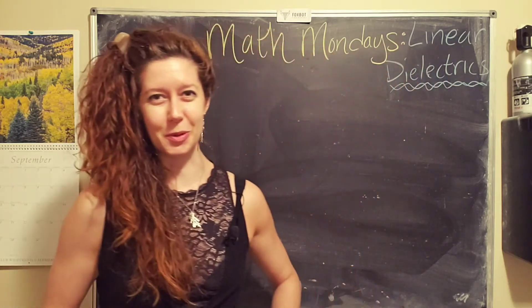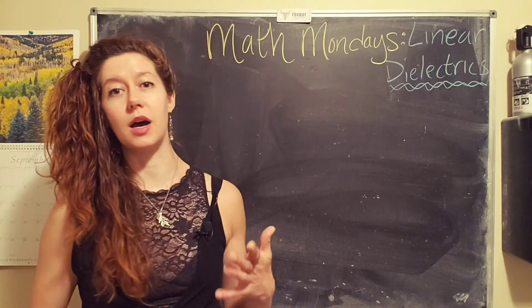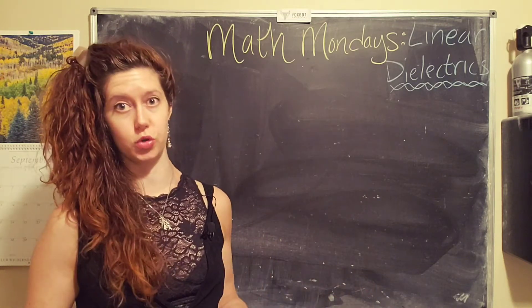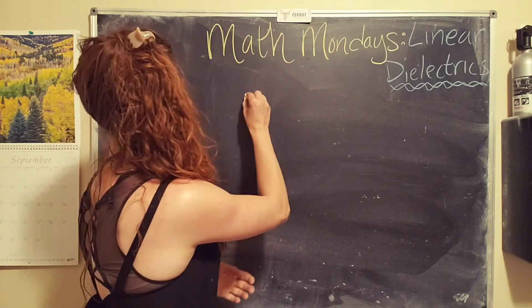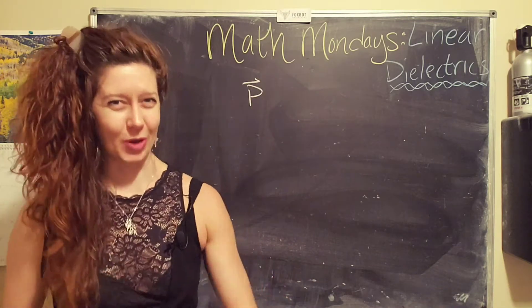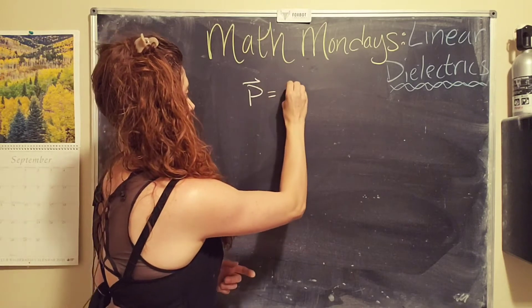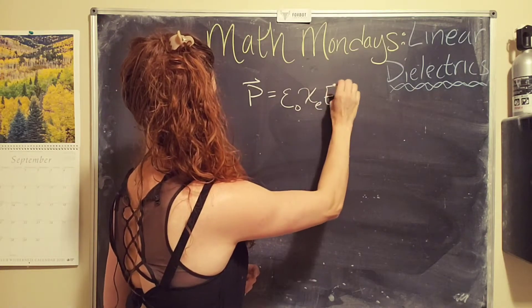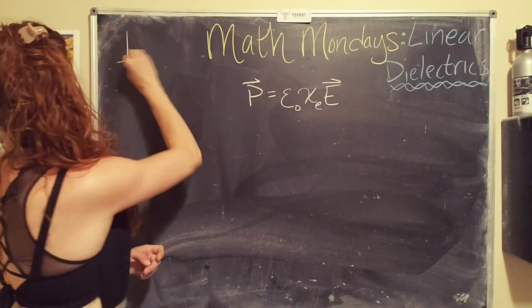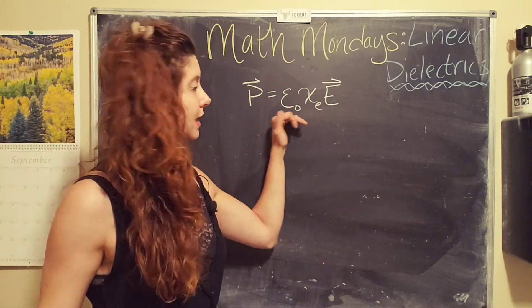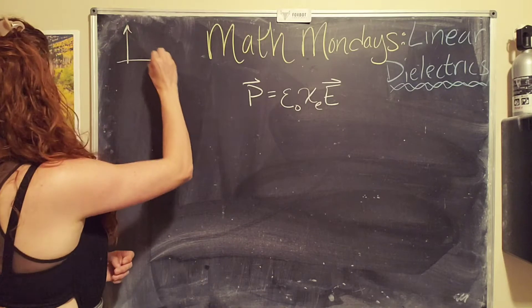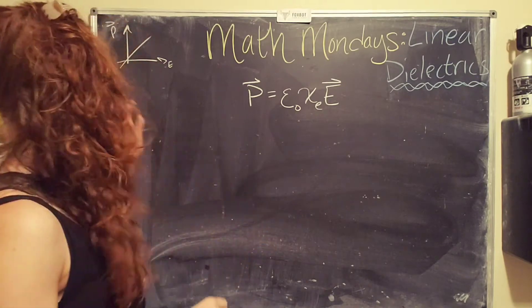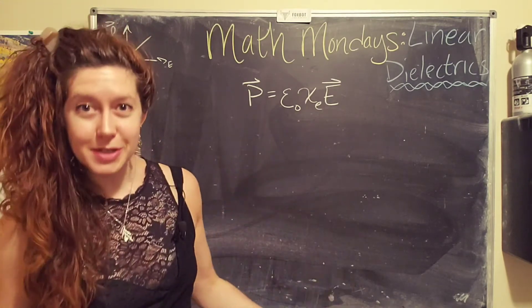And so for a lot of materials, it took me a really long time to get a piece of chalk. For a lot of materials, the resulting movement of bound charges, which we're calling polarization, is directly proportional to the applied electric field. Or in other words, in math words, the polarization P is equal to the vacuum permittivity times this new constant times the electric field. And this is where the term linear comes in. This is a linear relationship. Because if we were to plot the polarization as a function of the electric field, it would look something like that.